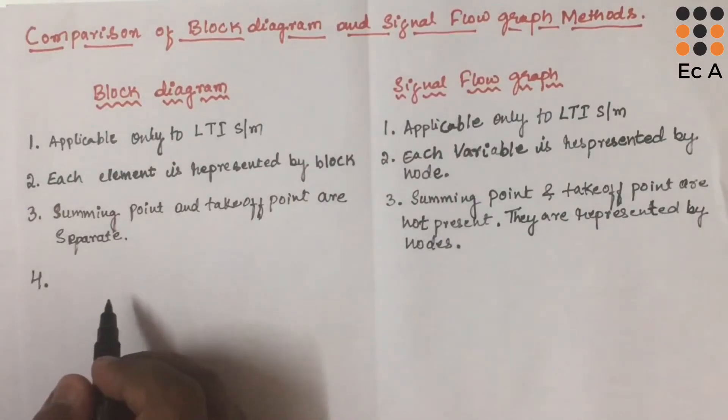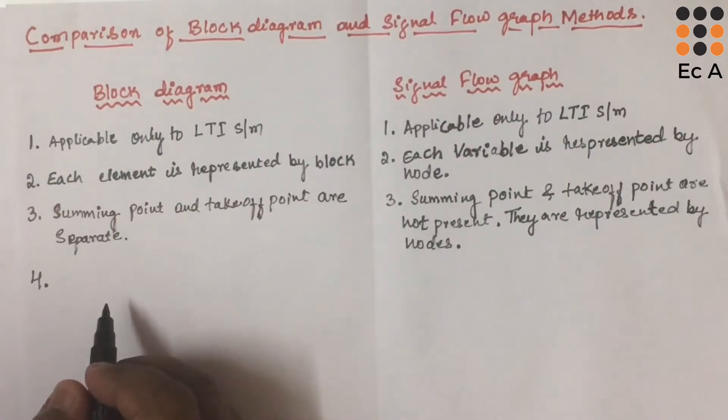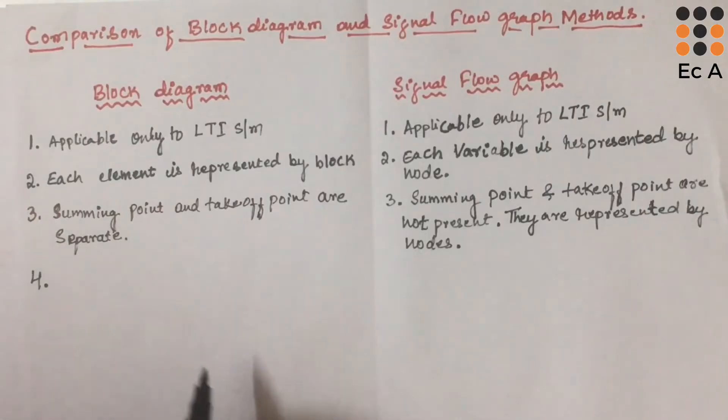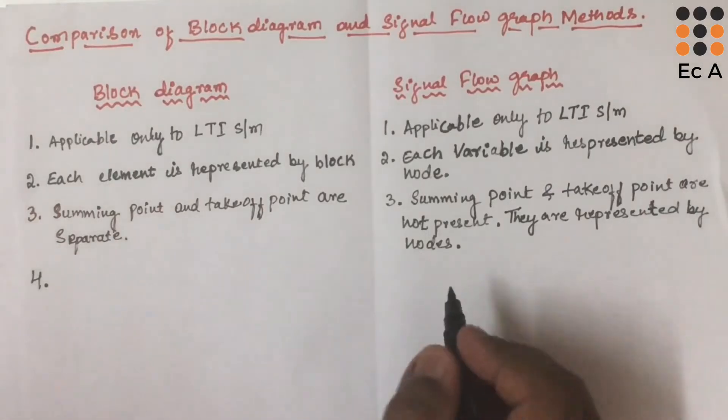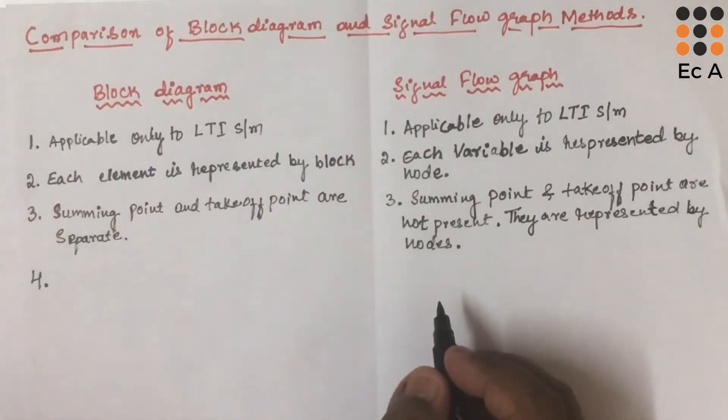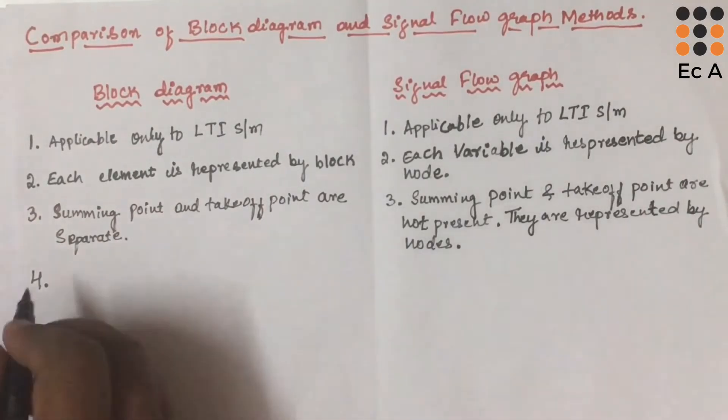The concept of self loop does not exist in the block diagram approach. Self loop can exist in the signal flow graph approach.